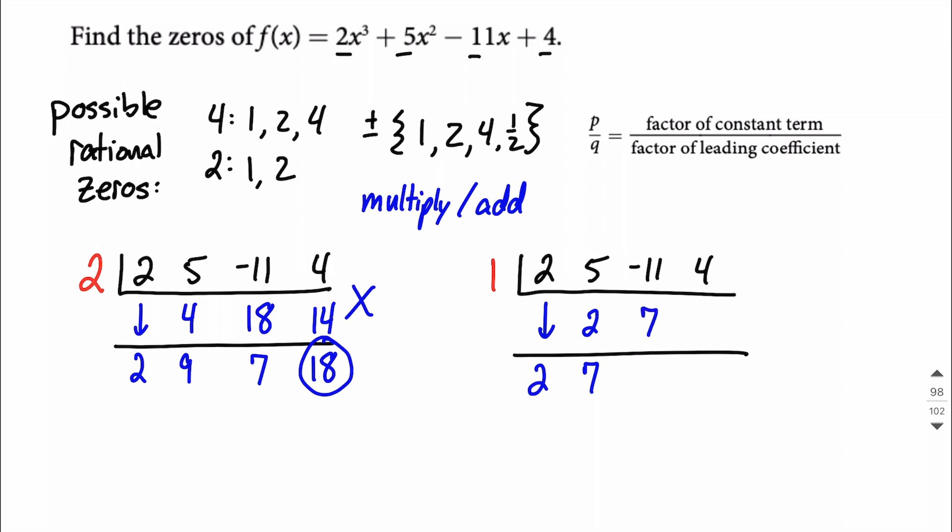Multiply, 1 times 7 is 7. Add, negative 11 plus 7 makes negative 4. Multiply, 1 times negative 4 is negative 4. And add, this time we do end up with 0, which is what we're looking for. So this one works.